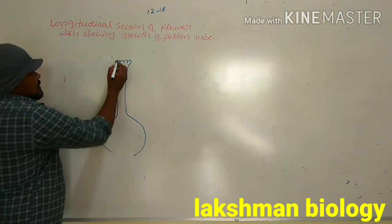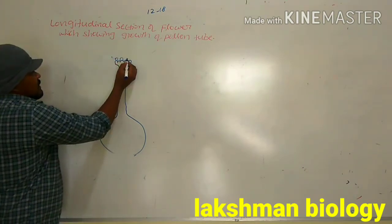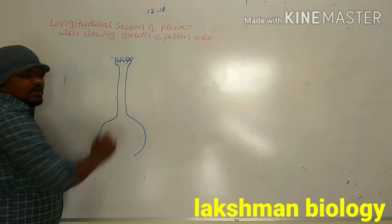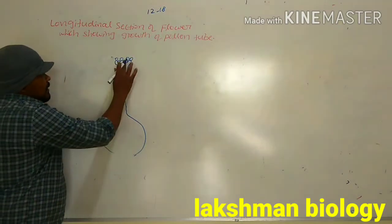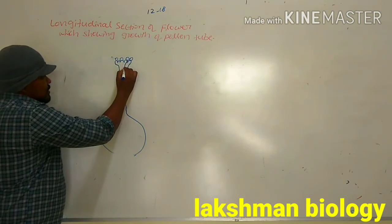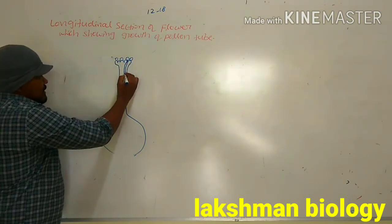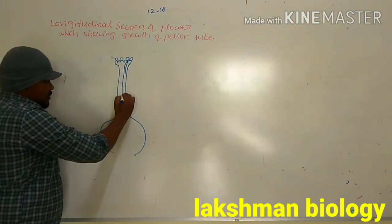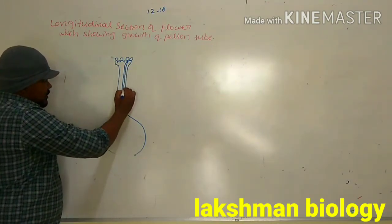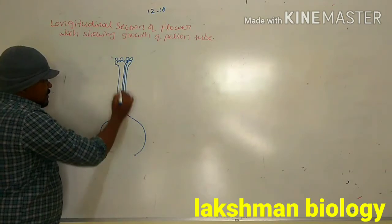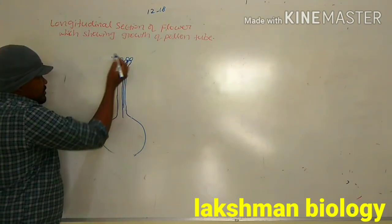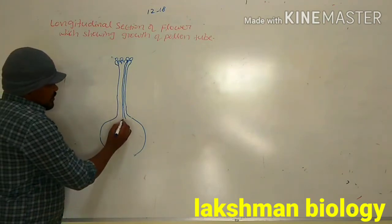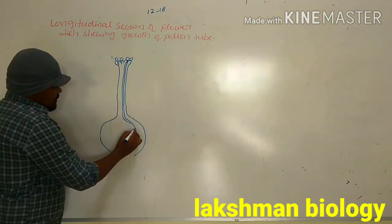After that, these are the pollen grains. These pollen grains are landed on the stigma. Then, pollen tubes are formed from the pollen grains. Pollen grains are deposited on the stigma, then they will form the pollen tube. These are the pollen tubes. I will draw one pollen tube which is formed from one pollen grain. This is the pollen tube.